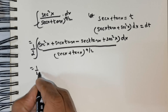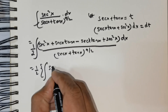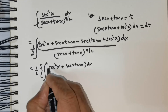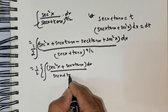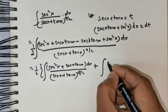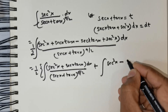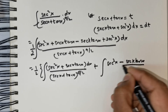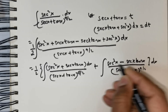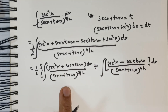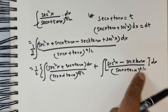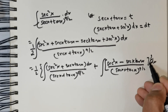Now let me split this integral. This is going to equal one-half times the integral of secant squared x plus secant x tan x, multiplied by dx, divided by secant x plus tan x raised to the power of 9 over 2, plus the integral of secant squared x minus secant x tan x over secant x plus tan x raised to the power of 9 over 2, with the differential operator dx. The first part is easily integrable; the second part will be a challenge.